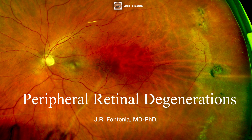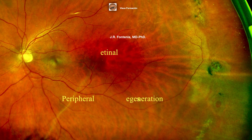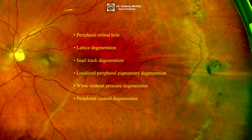In this video we are going to see a clinical case with different types of peripheral retinal degenerations that have occurred simultaneously. This is the clinical case of a 59-year-old male with peripheral retinal hole, lattice degeneration, snail track degeneration, local peripheral pigmentary retinal degeneration, white without pressure, and peripheral cystoid degeneration.